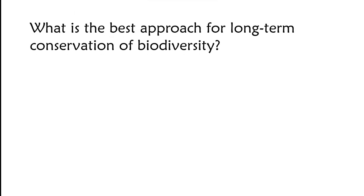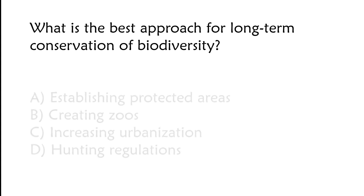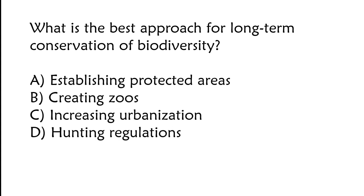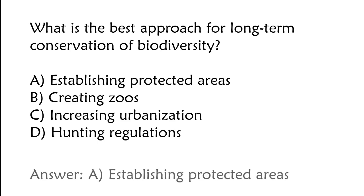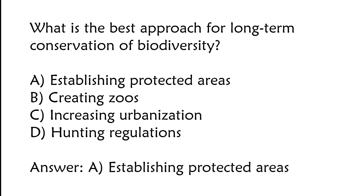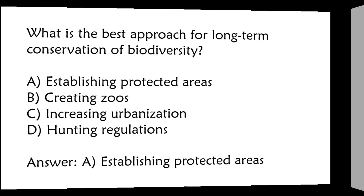What is the best approach for long-term conservation of biodiversity? A) Establishing protected areas, B) creating zoos, C) increasing urbanization, D) hunting regulations. The correct answer is option A, establishing protected areas.